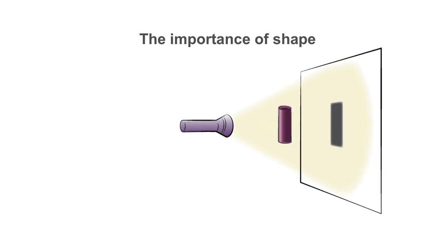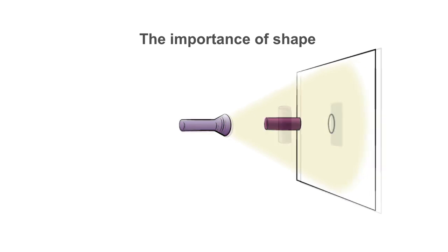If the cylinder is hollow and vertical, the shadow remains a rectangle. If the cylinder is hollow and horizontal, the shadow is a circle.